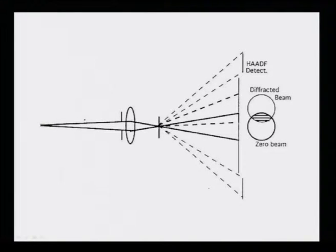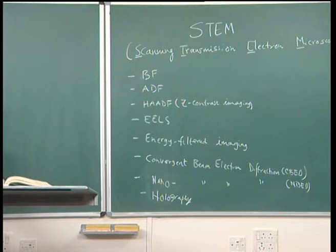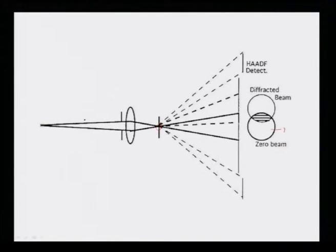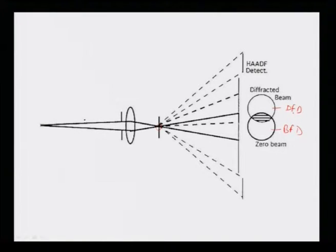There are a variety of STEM detectors available to obtain different signals beyond bright-field and dark-field. As the beam falls on the sample, part of the beam diffracts — forming diffraction discs — while the zero beam passes through. We can place a bright-field detector and a dark-field detector to obtain conventional bright-field and dark-field images. Because collection efficiency is high, dark-field image quality — and in many cases resolution — is also better, as the diffracted beams carry very high-resolution information.